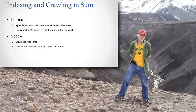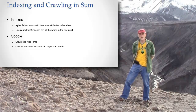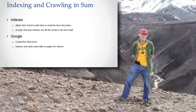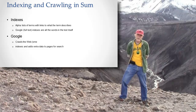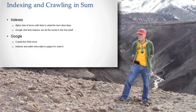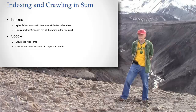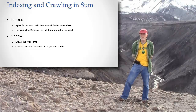In a book index, do they take all the words and shake them off the page? No. They go and choose the most significant words. And some of the words in a book index may not even be in the book — they're just words that are describing the content of the book. But that's not how it works in a full text index, in a Google type index.